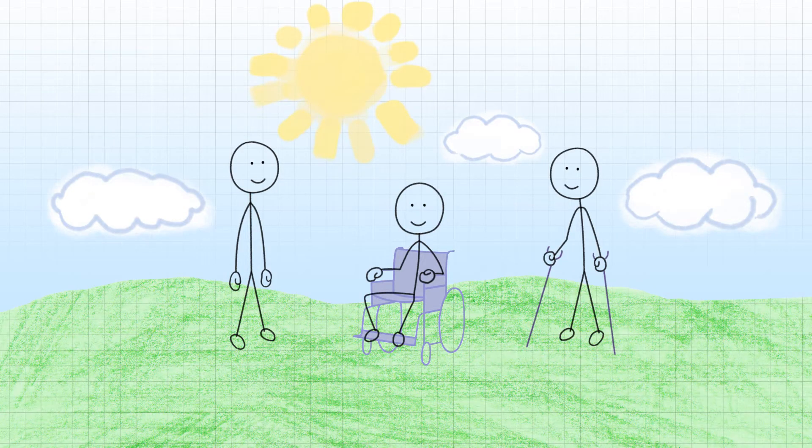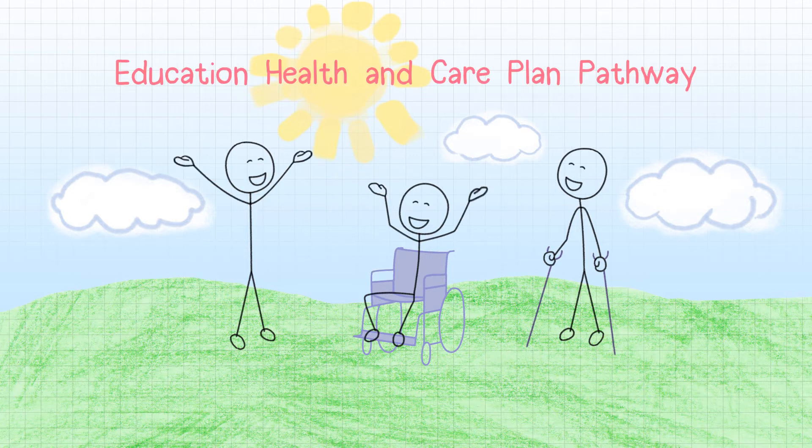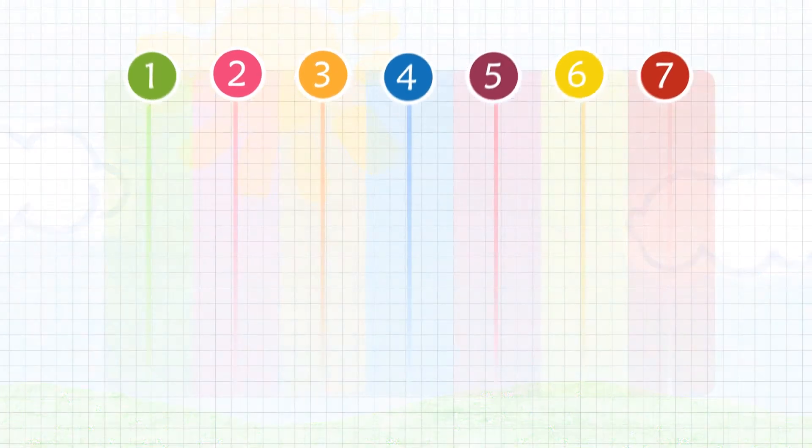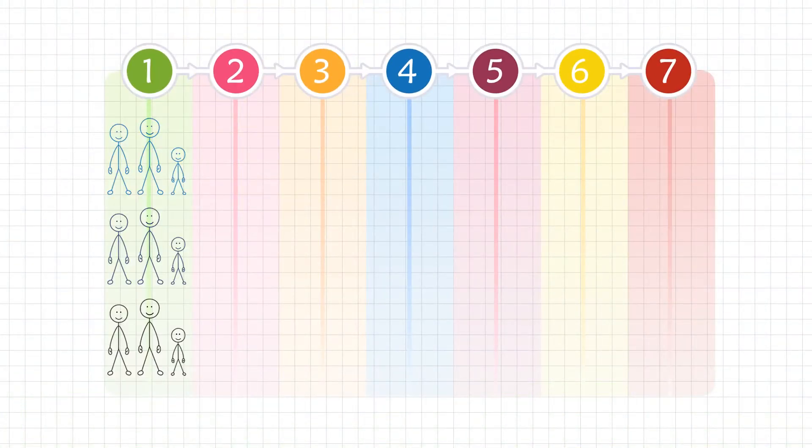We describe the journey for an EHC plan as an education, health and care plan pathway. We use a lollipop model to explain the seven stages of the pathway. This animation explains what each of these stages means to young people and their families.